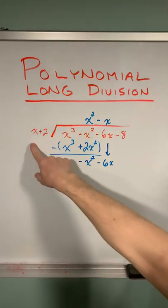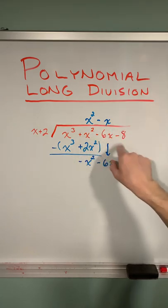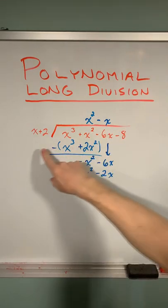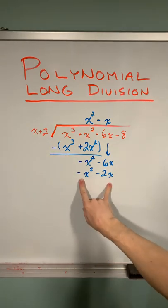Negative x squared divided by x is negative x. So I place that over the x term in the dividend. I can multiply that negative x by each of these terms to produce this expression here.